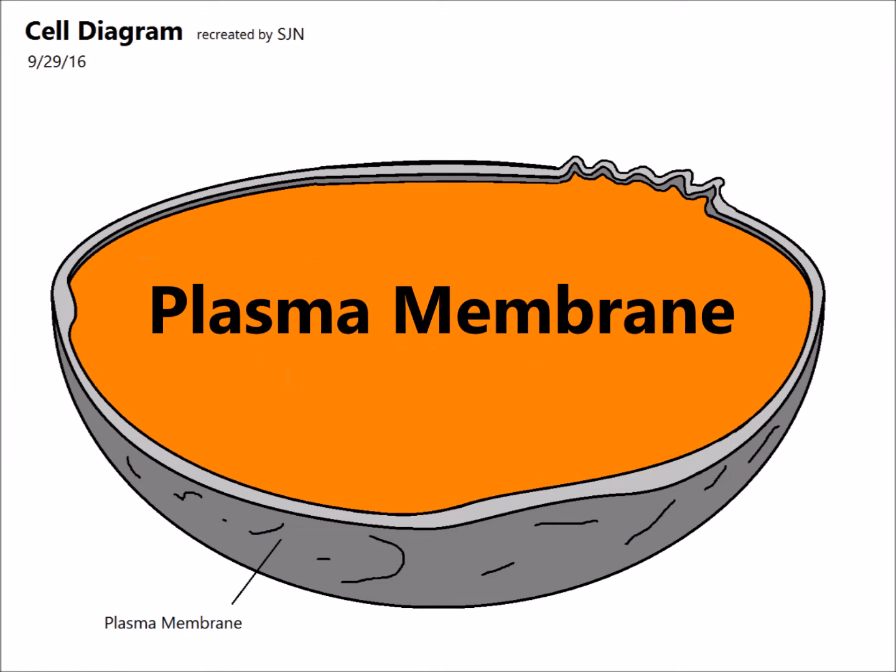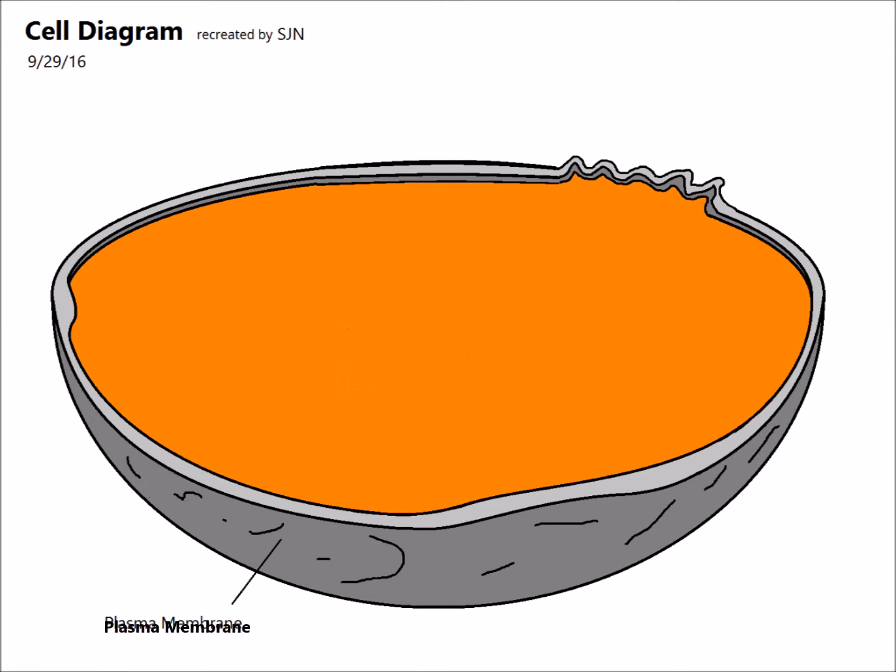First, we have the plasma membrane. It is the protective outer covering of a cell that regulates what goes in and what goes out. In this cell diagram, the plasma membrane is grey.